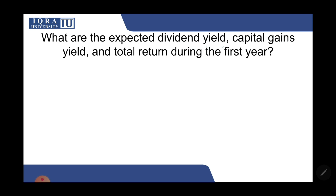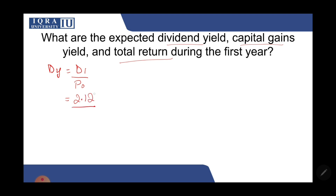Now, what are the expected dividend yield, capital gain yield, and total return during the first year? The formula for dividend yield is D1 divided by P0. D1 was 2.12 and P0 was 30.29, giving a dividend yield of 7%.